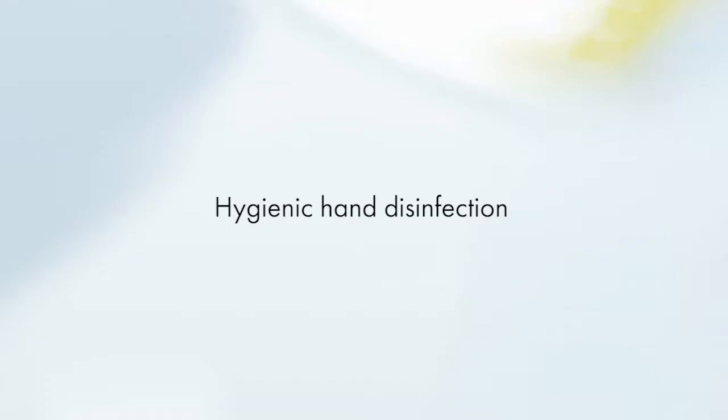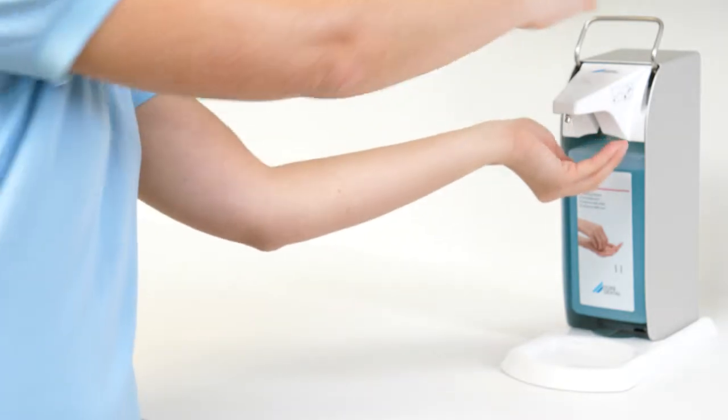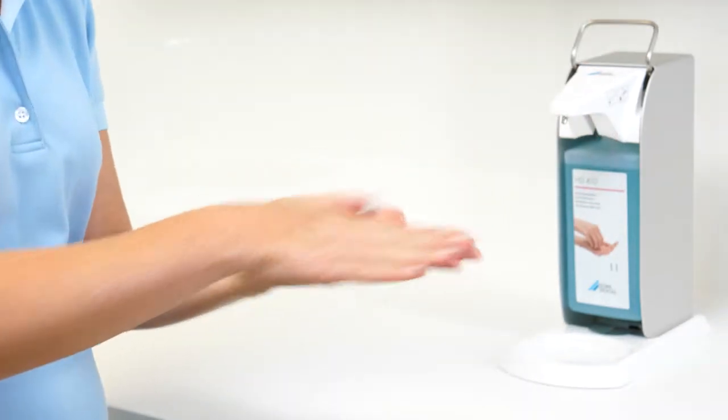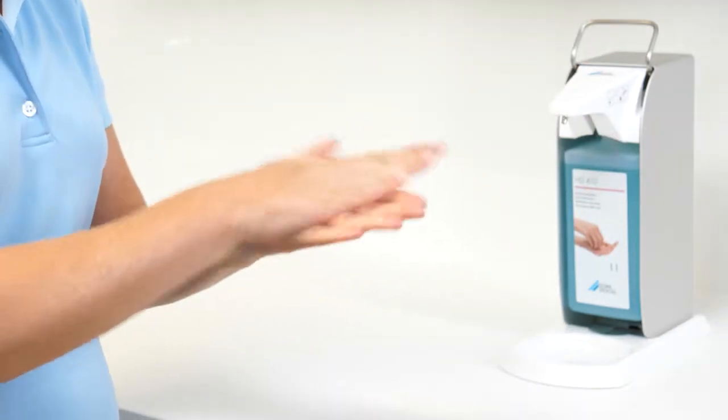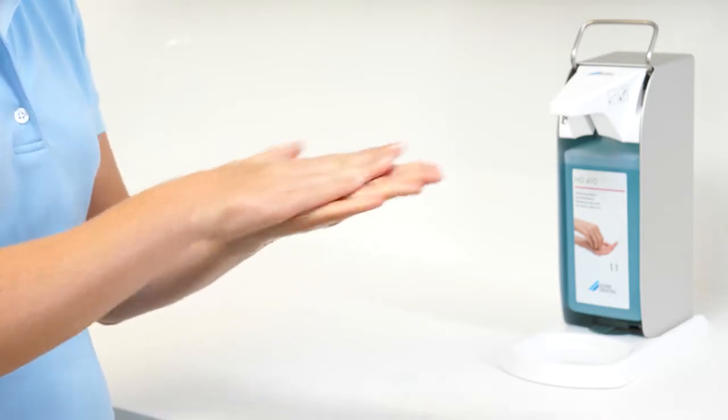Hygienic Hand Disinfection. For the hand disinfection, all parts of the hand, including the wrist, must be completely soaked with sufficient disinfectant and rubbed, e.g. with HD 410 from Dürr Dental.